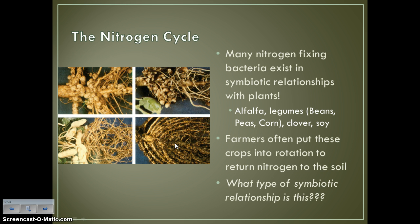Some nitrogen-fixing bacteria are free-floating in the soil, but there are specific types that exist in close symbiotic relationships with plants. Plants like alfalfa, legumes (beans, peas), corn, clover, and soy have little nodules that are full of these nitrogen-fixing bacteria. Farmers will put those crops into their rotation in order to return nitrogen to the soil, so that the next year it's basically ready-made fertilizer and they can plant something else that's going to grow nice and big.